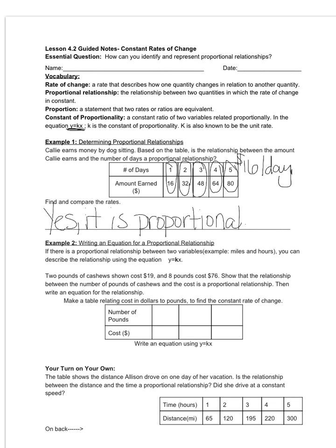Now for our second example, this is where we dive a little deeper and we are going to write an equation from our proportional relationship. But again, we have to start by determining if we even have a proportional relationship. So if there is a proportional relationship between two variables. So in this case example, when the two variables were the number of days and the amount of money earned.